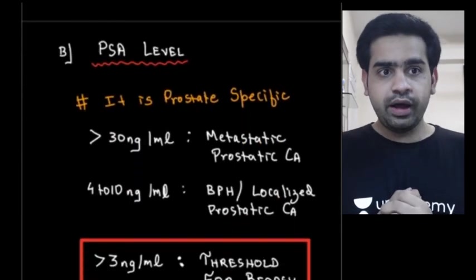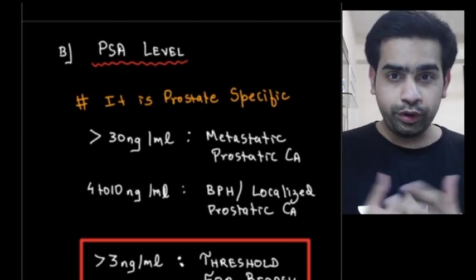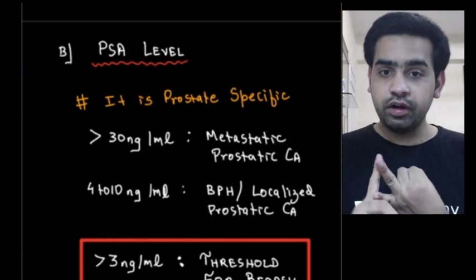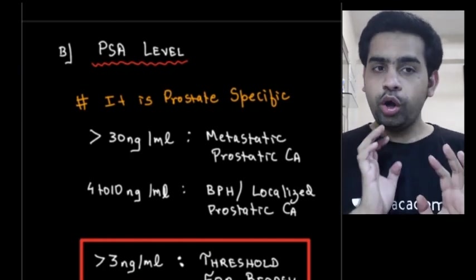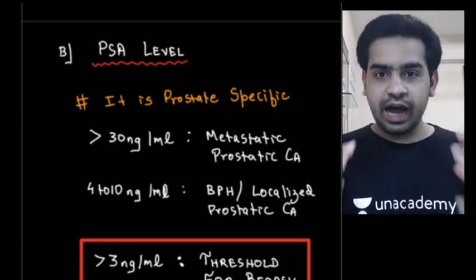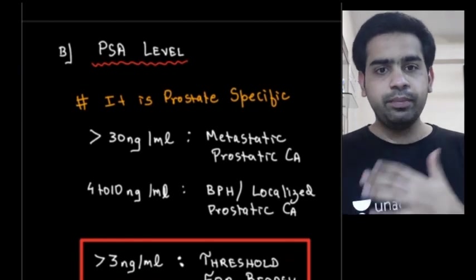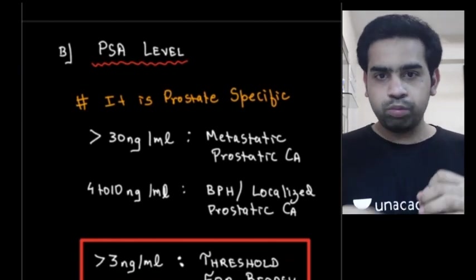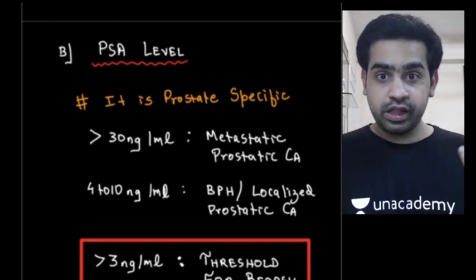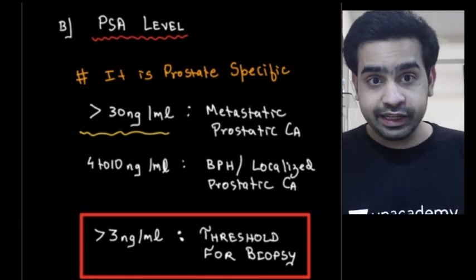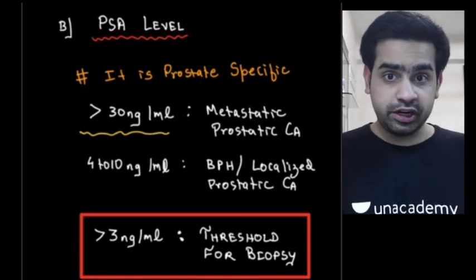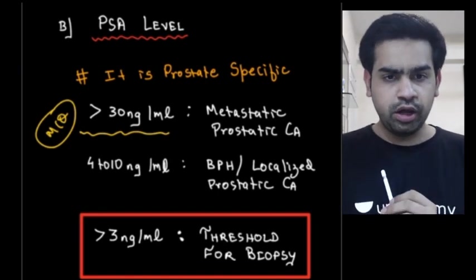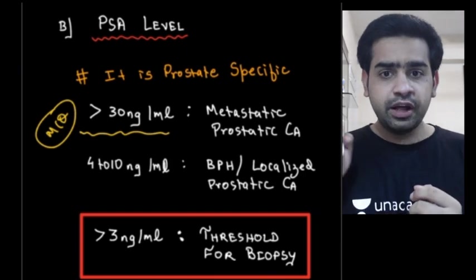The next investigation is PSA — Prostate Specific Antigen. PSA is prostate specific but not disease specific. A larger prostate gives higher PSA levels. It does not tell you whether the patient has BPH or carcinoma. However, a PSA of more than 30 nanograms per ml strongly suggests metastatic prostatic carcinoma — this is important to remember.